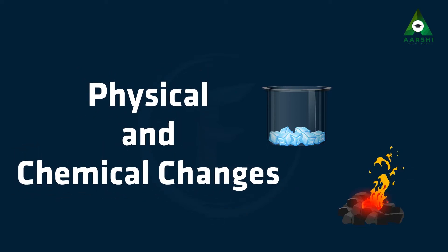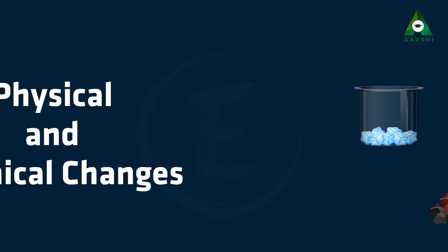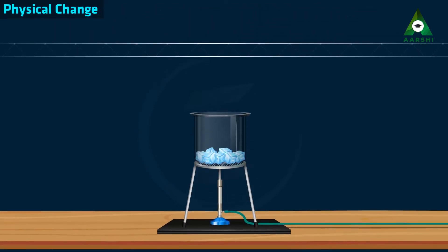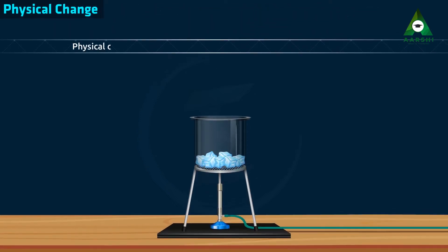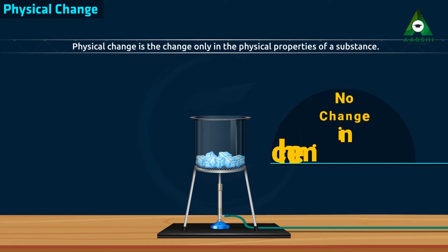Physical and chemical changes. Physical change is the change only in the physical properties of a substance. After the physical change, the chemical properties of the substance remain the same.